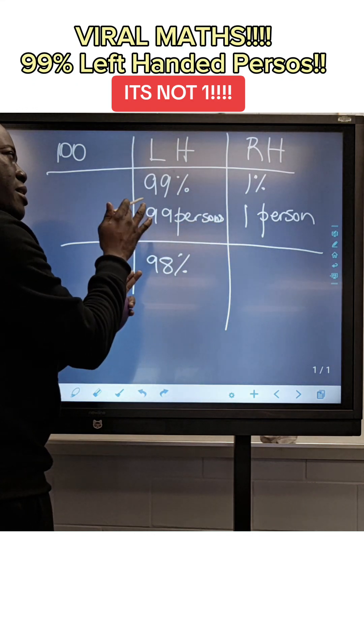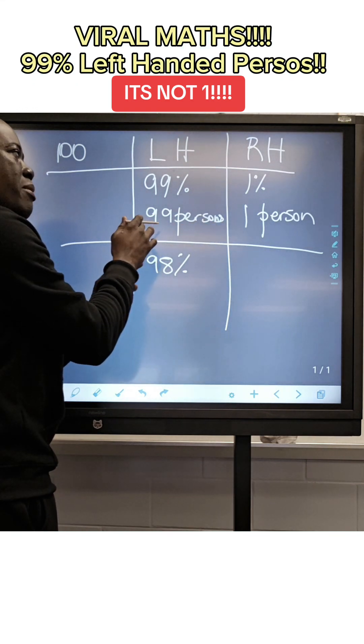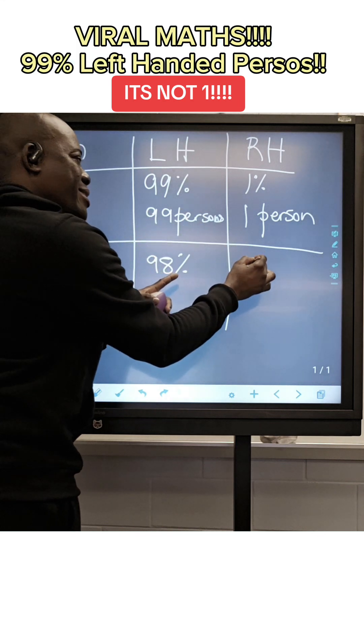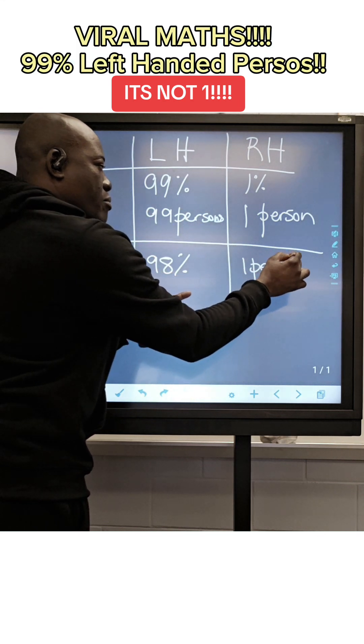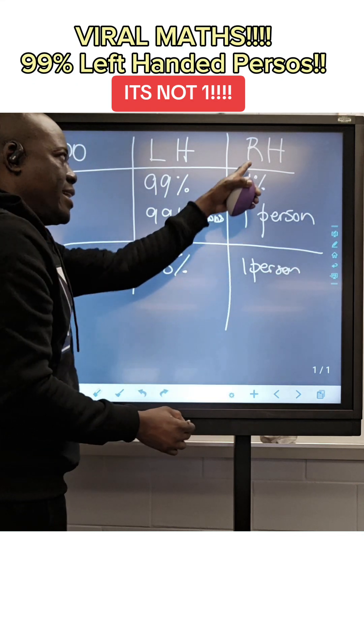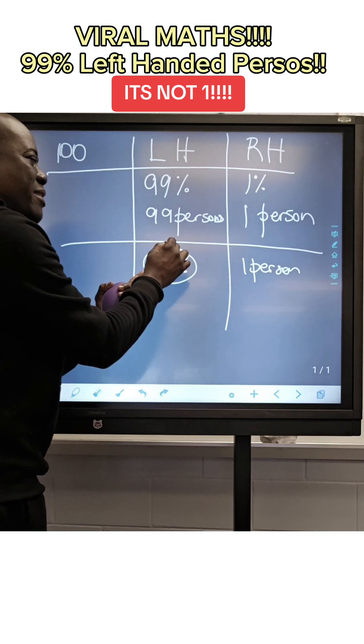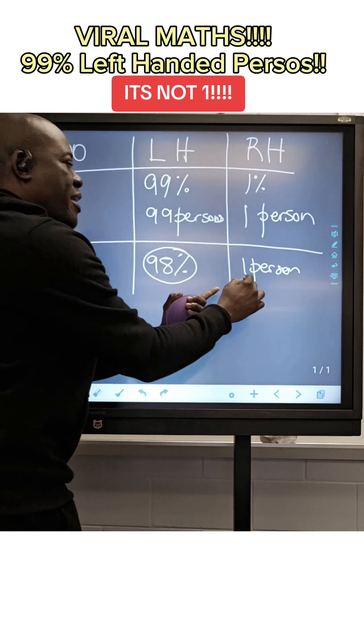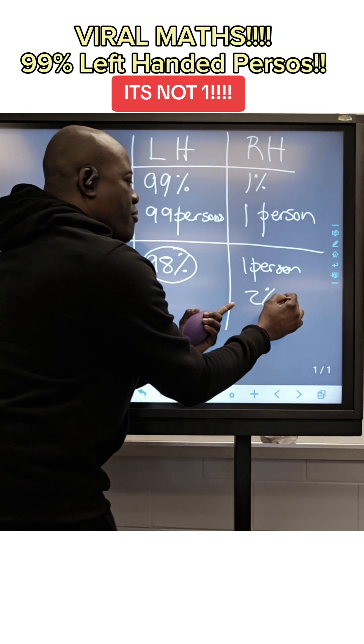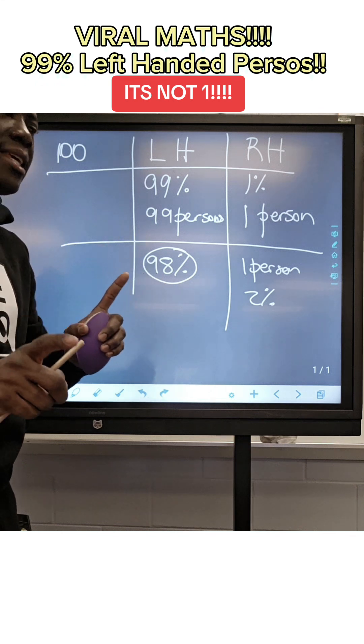And the question says, we want to reduce the number of left-handed persons. So we still will have this one person that is right-handed. Now, when we have 98% of left-handed people, we're going to have 2% of right-handed persons. And that is the key.